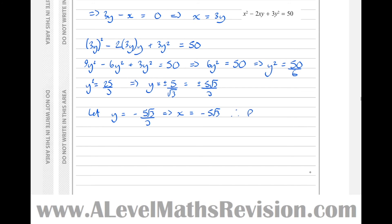Therefore, P is minus 5 root 3, minus 5 root 3 over 3.